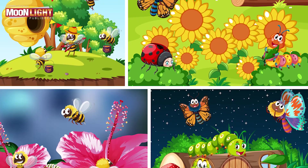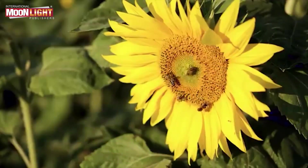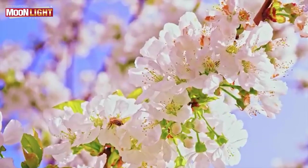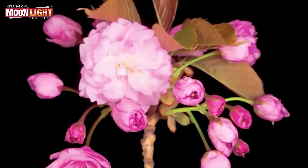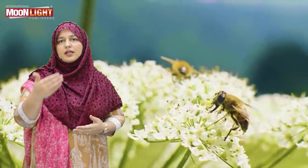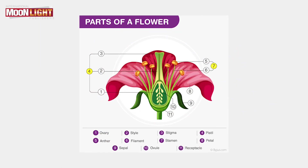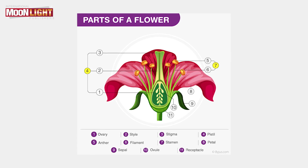When a bird or insect visits a flower, pollen grains attach to their body. When the insect or bird moves from one plant to another, the pollen is carried from one flower to another. This way, new individual plants can germinate — a very beautiful process.